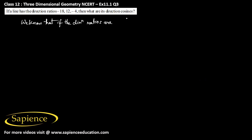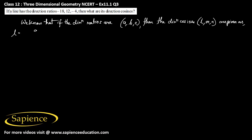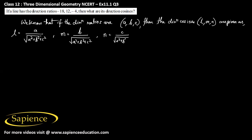If the direction ratios are a, b, and c, then the direction cosines l, m, and n are given as: l equals a divided by square root of (a² + b² + c²), m equals b divided by square root of (a² + b² + c²), and n equals c divided by square root of (a² + b² + c²).